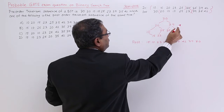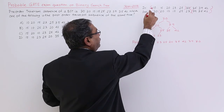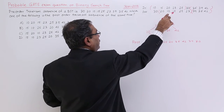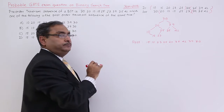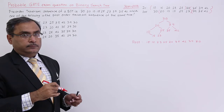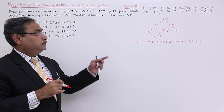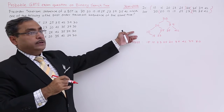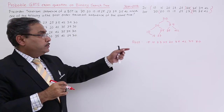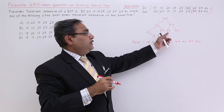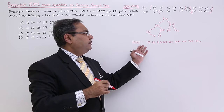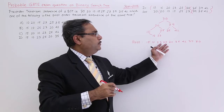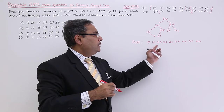If you construct the tree from this in-order and pre-order, it will come out like this. You can do this as class work — you can do it yourself. Now, if you just take the post-order traversal of this particular tree...